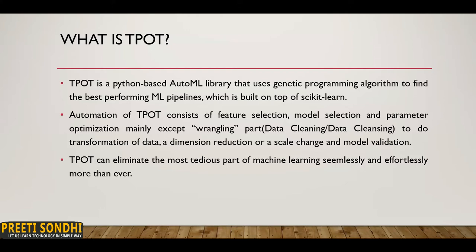For better understanding, let's take an example. When we have the right data, computing power, and a machine learning model, we can discover solutions to any problem. But knowing which model to use can be a challenge — it could be a decision tree, k-nearest neighbors, linear regression, and many more. This is where genetic programming is of great use: it automatically figures out which model is best for your dataset, and also helps find the best parameters and feature samples. It can be thought of as a natural selection or evolutionary algorithm.